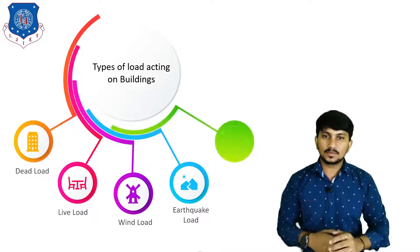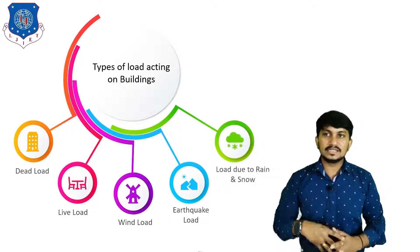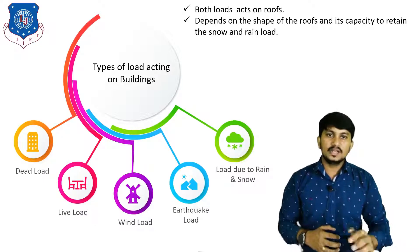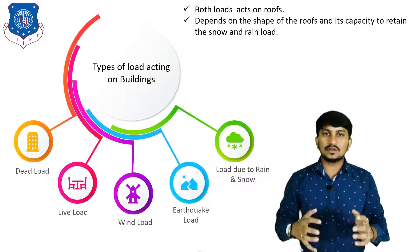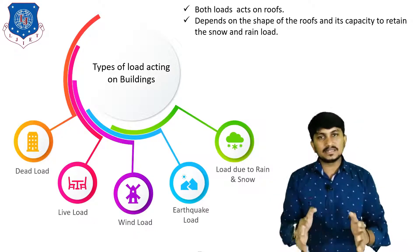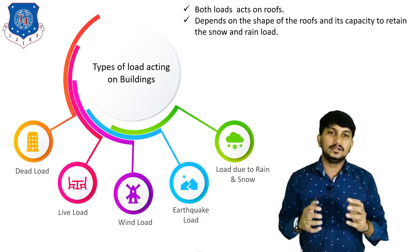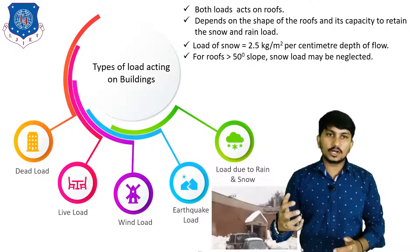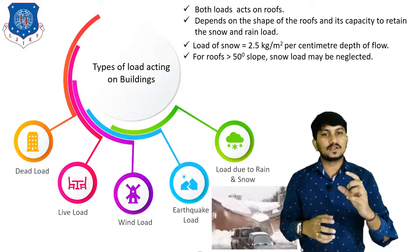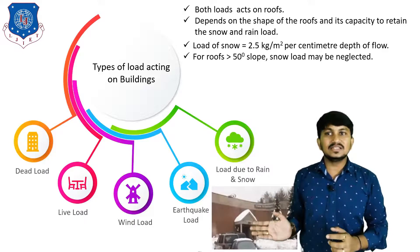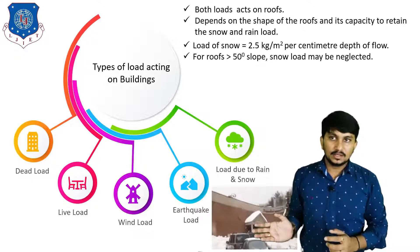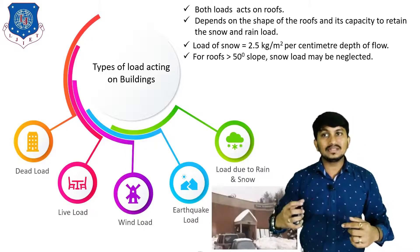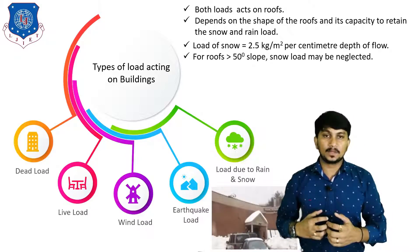Now let us move to the fifth type of load: rain load and snow load. Both loads act on roofs. It depends on the shape of the roof and its capacity to retain snow and rain. The load of snow is equal to 2.5 kg per m² per cm depth of snow. As seen in this video, slab collapse can occur due to snow load, so we must consider snow load in the design of the building.